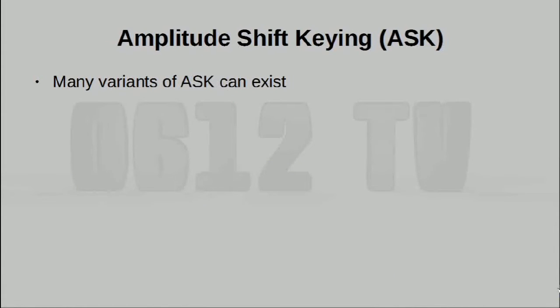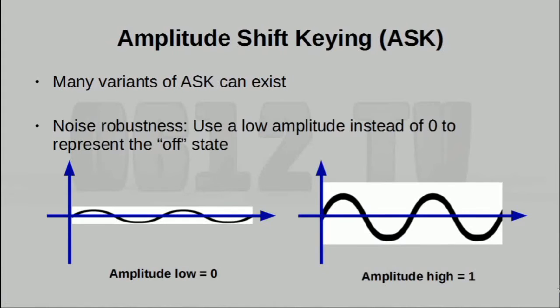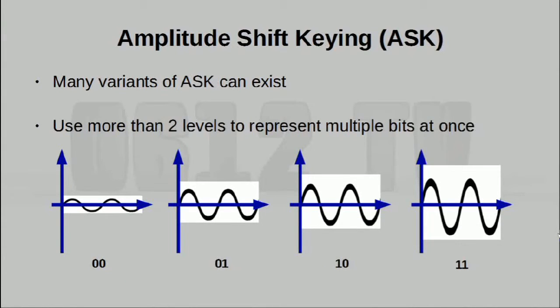Of course, that is not the only way to do things. There are many ways you can actually change up amplitude shift keying, and these variants can be used to improve the technique in different ways. Now, one example is to use a low amplitude instead of completely no signal to represent the low state. This makes the transmission slightly more robust to noise, since of course, when there is noise, you're not gonna get an amplitude of exactly zero. You're gonna get a little bit of noise here and there, and that could be misinterpreted. Having a low amplitude can also help us identify the difference between a low signal versus a completely lost signal.